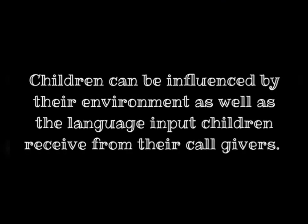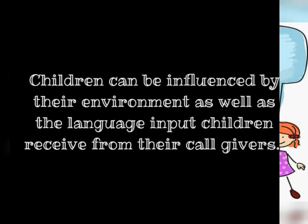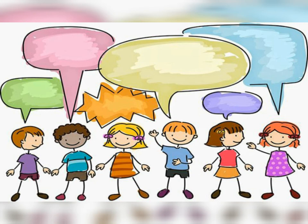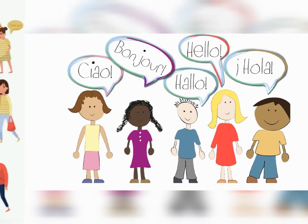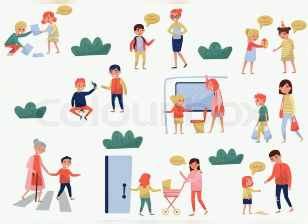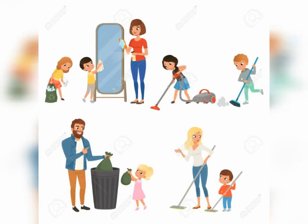Children can be influenced by their environment as well as the language input they receive from their caregivers. The child is a little linguist analyzing language from randomly encountered adult utterances. The social interactionist theory proposes that language exists for the purpose of communication and can only be learned in the context of interaction with adults and older children.